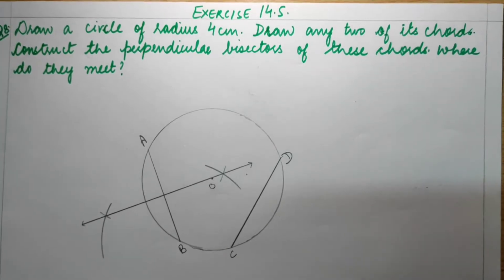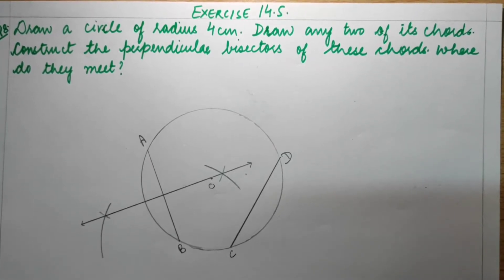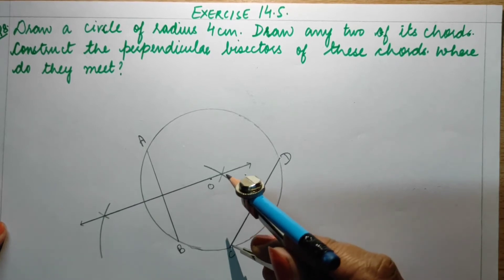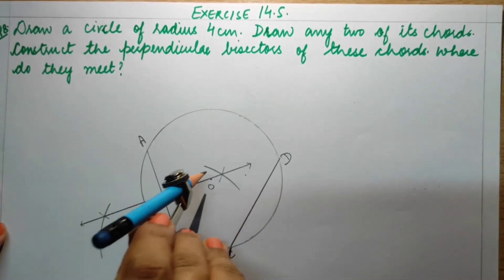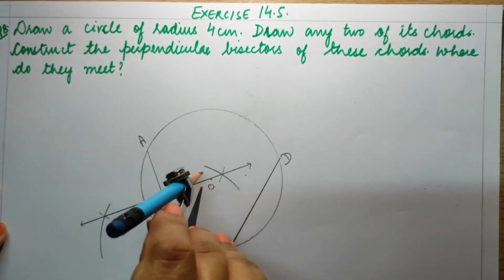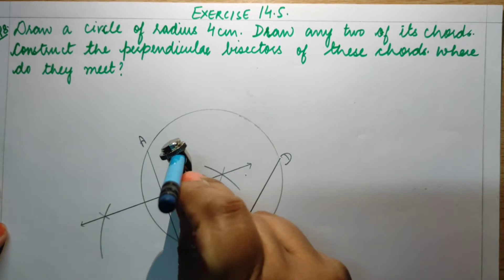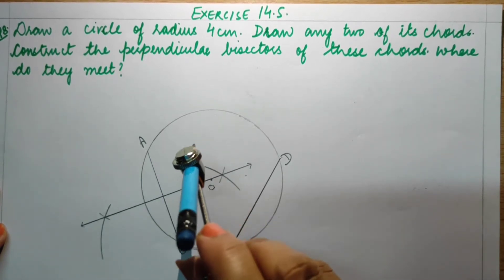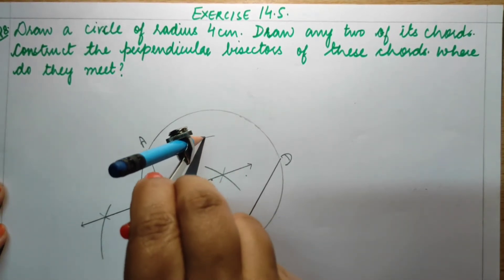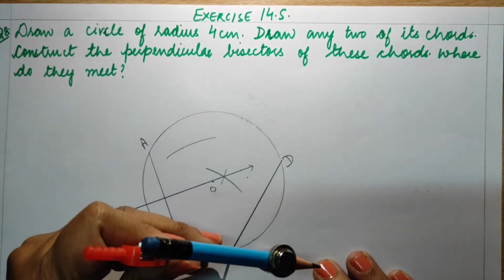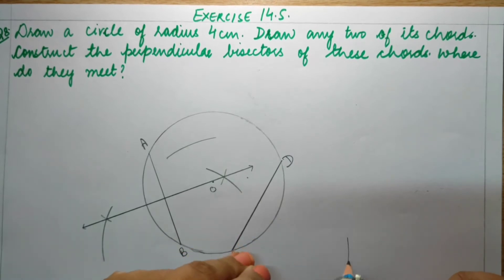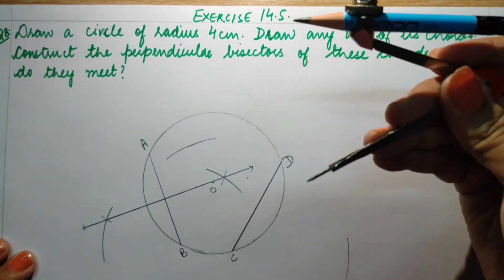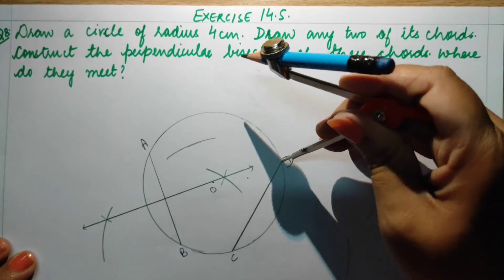Next, we have to draw the perpendicular bisector of the other chord CD. Open your compass to more than half the length of CD and try to draw the arcs. If the arcs mix up with the previous ones, open the compass a bit more so they don't overlap. From point C we draw two arcs, and with the same compass length we draw two arcs from point D.